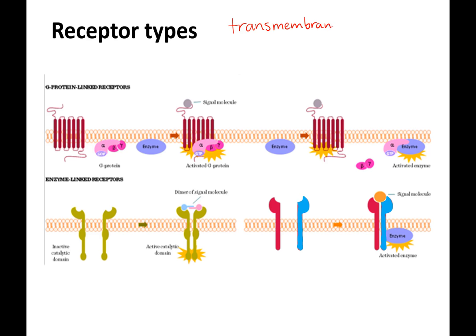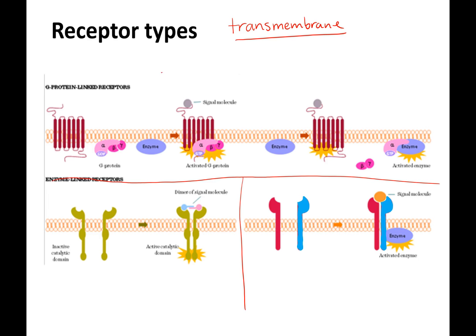Let's look at our three transmembrane receptor types — these are all transmembrane. We focus on the differences in their structure. Get used to doing the visualization because that's going to take you farther than trying to read a lot of unnecessary information. This first one is our G-protein coupled receptor, and you recognize it because it has seven transmembrane regions.